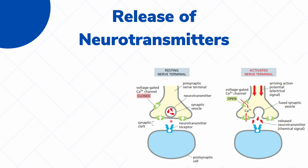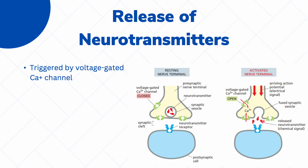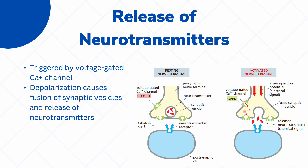In the nerve terminal, we have what we call synaptic vesicles, which contain our different neurotransmitters. These vesicles are attached to the cell membrane of the terminal and are waiting to be released into the synaptic cleft. They are released through another voltage-gated channel called the voltage-gated calcium channel. As the action potential reaches the nerve terminal, it activates these calcium channels, allowing the entry of extracellular calcium into the nerve terminal. This causes depolarization and the fusion of synaptic vesicles to the cell membrane, releasing neurotransmitters into the synaptic cleft.